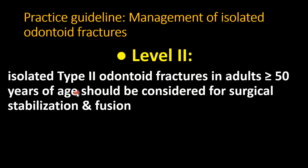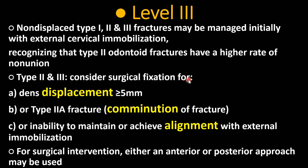Practice guidelines for management of isolated odontoid fractures are Level 2 evidence. Isolated Type 2 odontoid fracture in adults over 50 years of age should be considered for surgical stabilization and fusion, though this is not a fixed rule. External immobilization can be used for all types. At Level 3, non-displaced Type 1, 2, and 3 may be managed initially with external cervical immobilization, recognizing that Type 2 is likely to need surgery.